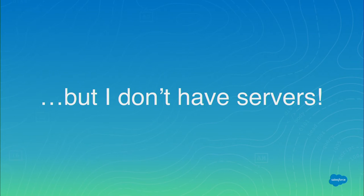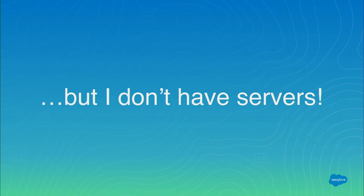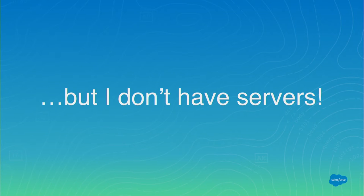I was really excited when Atlassian started offering the Pipelines offering, which we're going to talk about today. Because if you're building for the cloud, why would you not already be building in the cloud? Wouldn't it be awesome if you could easily set up your own continuous delivery system in the cloud in less than an hour, fully integrated with your version control system, for free or cheap? That's what we're going to talk about today — Bitbucket Pipelines.